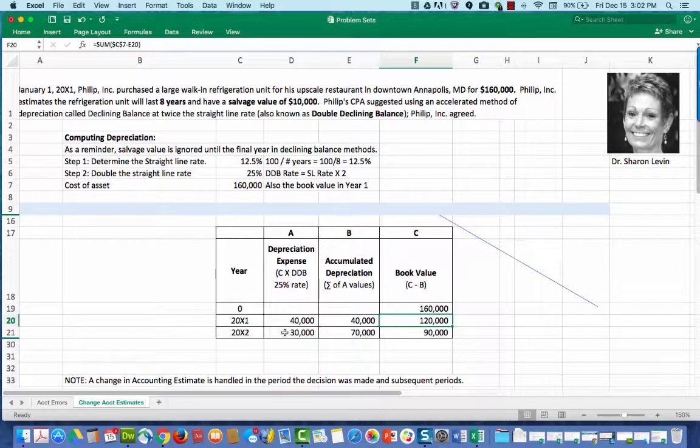For the next period, 2000X2, we take $120,000, we multiply that times our double declining rate of 25% and that gives us $30,000 of depreciation expense. When added to year one depreciation, we have accumulated depreciation of $70,000. And when we subtract $70,000 from the beginning of the year book value, which was $120,000, we end up with $90,000.